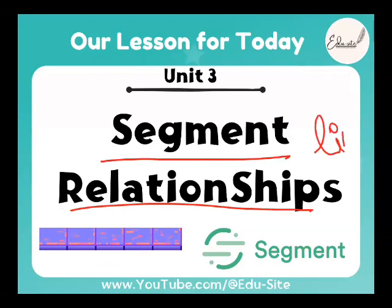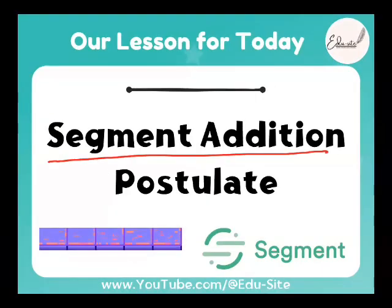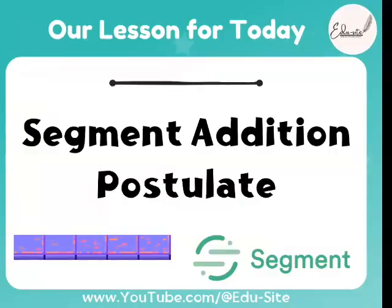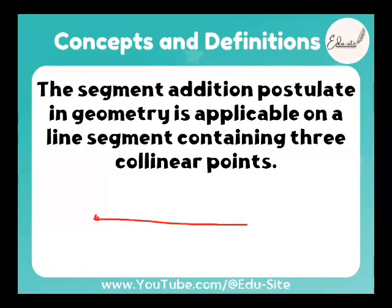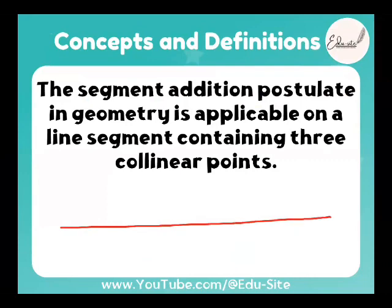In this unit we are going to deal with lines only. We have a Segment Addition Postulate in your topic. The first theorem mentioned is the Segment Addition Postulate. You know what a segment is — in a line, if it is divided into any parts, those parts are called segments. This postulate is applicable on line segments containing three collinear points. What does collinear mean?